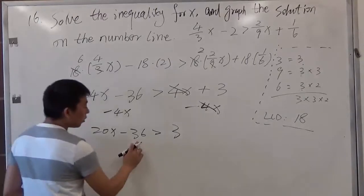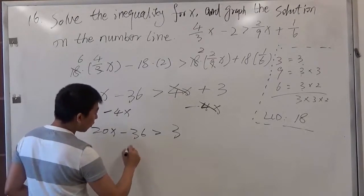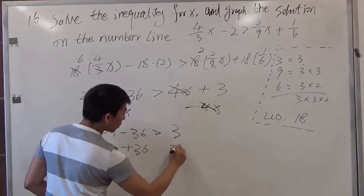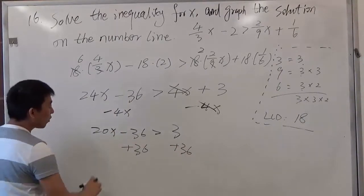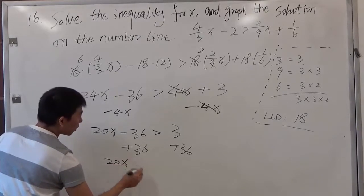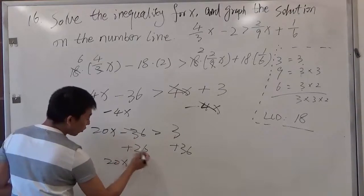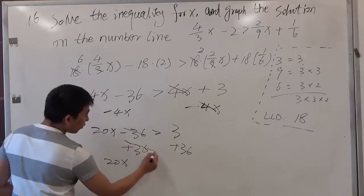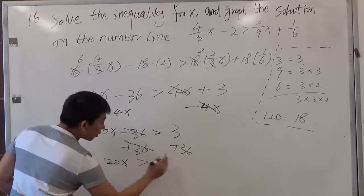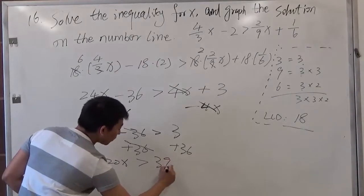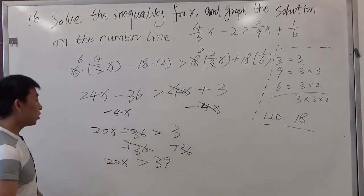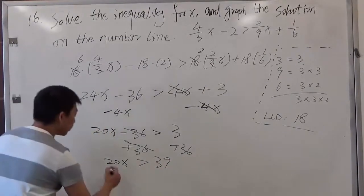Then we can move the number to the other side. Here's a minus 36. We can plus 36. Then what we have here is 20x. Negative 36 plus 36 cancel out, greater than 3 plus 36, which is 39. Then we divide the coefficient in front of x, divided by 20.